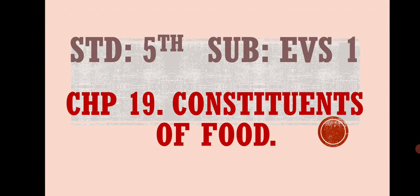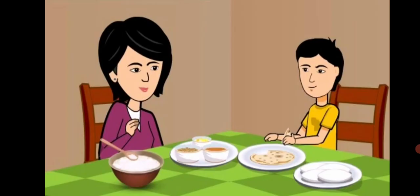Standard 5th Subject EVS 1 Chapter 19 Constituents of Food. Dear students, can you recall what is meant by diet? A food that a person or animal usually eats can be called as diet. For what purposes do we need food? We need food to get energy, for our growth.